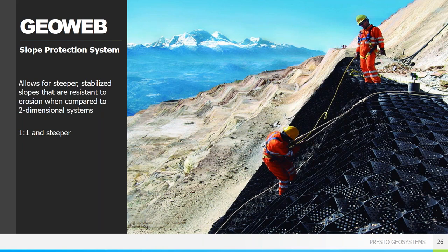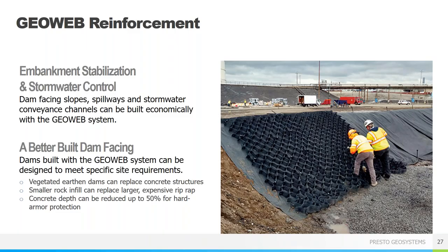Now we'll discuss the slope protection system. Using GeoWeb allows for steeper stabilized slopes that are resistant to erosion, and they're much more effective than two-dimensional systems such as turf reinforcement mats and erosion control blankets. We can do one-to-one slopes and even steeper, but keep in mind this is just a surficial protection layer — you do need a globally stable slope. GeoWeb is an economical alternative to large riprap and reinforced concrete for dam faces and spillways, and can even allow for vegetated faces that otherwise would not be possible due to hydraulic forces. If rock is used, GeoWeb allows you to greatly reduce the rock size, and with concrete, we can cut the required concrete depth in half compared to reinforced concrete solutions.